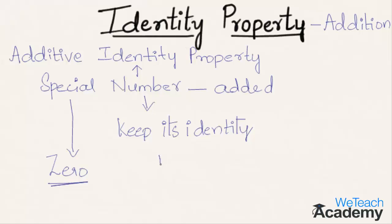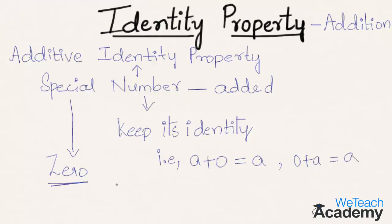Representing it symbolically: a + 0 = a, and 0 + a = a. For example, 15 is added to a number so that we get the sum as 15. That particular number will be the additive identity, that is 0. So 15 + 0 = 15.